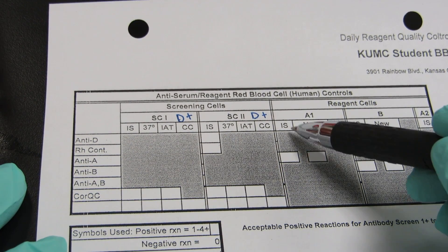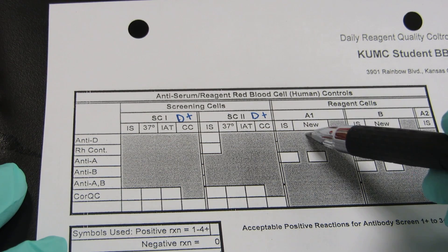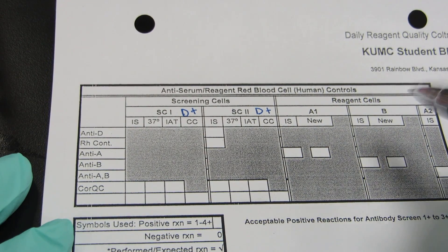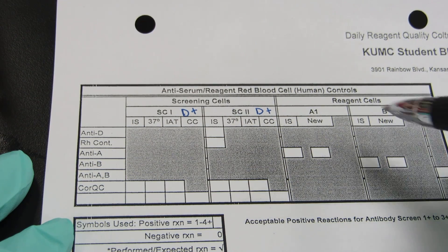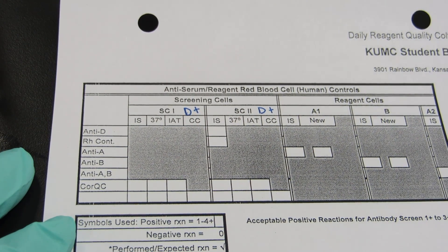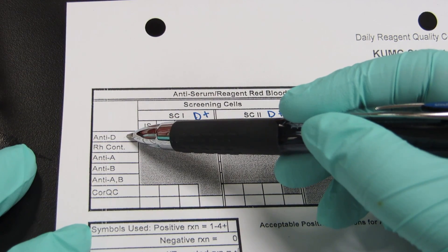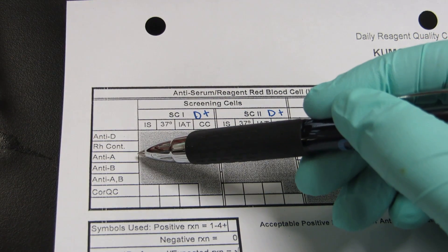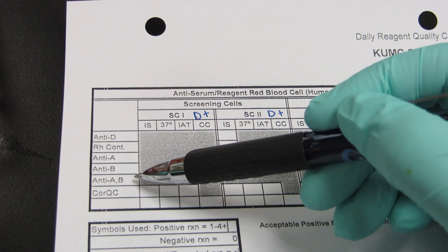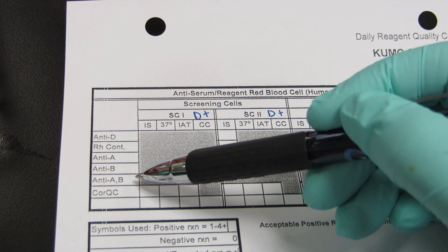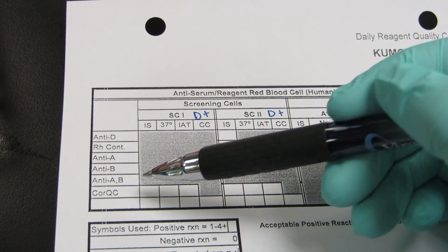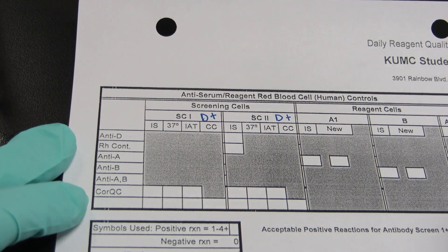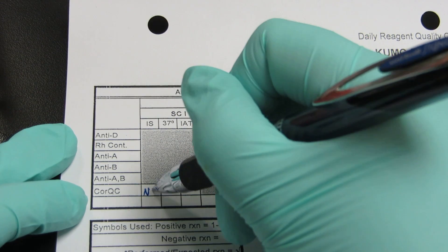You'll also notice here I have an immediate spin column and something called "new." New is to be used if you have to get a second bottle out for the day — maybe you ran out or it stopped working — so you would need to re-QC it, and this is where you would put that second result under "new." Going down the left column we have our antisera: anti-D, RH control, anti-A, anti-B, anti-A comma B — please don't call this anti-AB, it is anti-A comma B — and core QC. We're not really going to talk about core QC yet; this is used when we QC the screening cells in the second module, so for today I'm just going to write "not done."